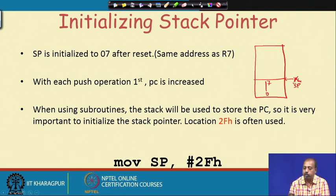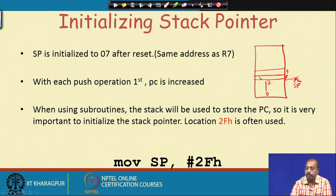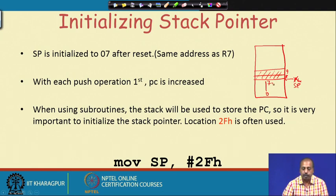With each push operation, the program counter is first incremented. Register bank 0 is in the range from 0 to 7, and the stack pointer is initialized to 7. If you are doing a CALL, the return value has to be saved onto the stack — it will be saved in locations 8 and 9. If your program is using those locations for something meaningful, those contents will be lost.